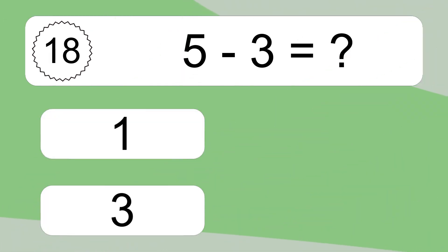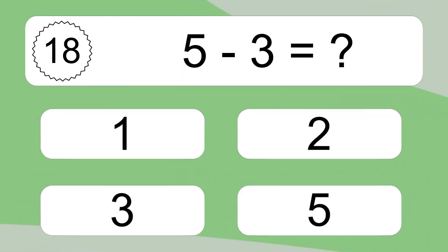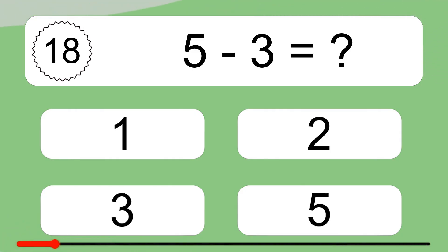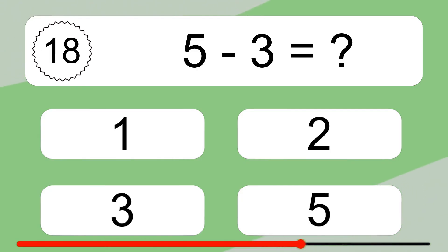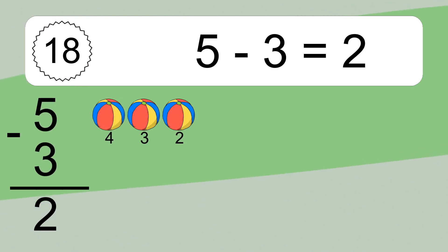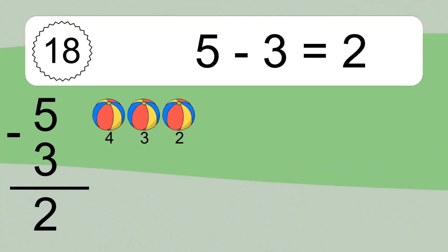5 minus 3 equals what? 5 minus 3 equals 2. Let's count it. 4, 3, 2.